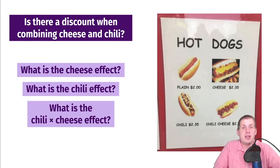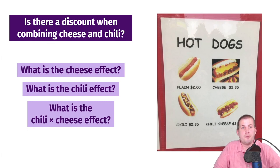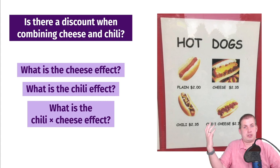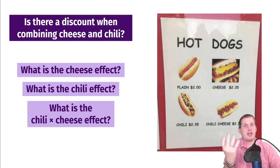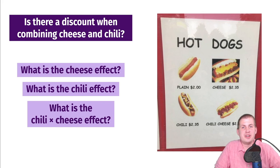This is important for diff-in-diff because when we calculate difference-in-differences estimates, we're using interaction terms for two specific variables: a group variable for treatment and control, and a time variable for before and after. Interacting those two gives us the difference-in-differences estimate. So let's go ahead and start talking about difference-in-differences more specifically.